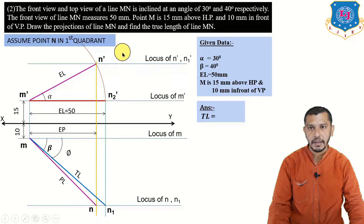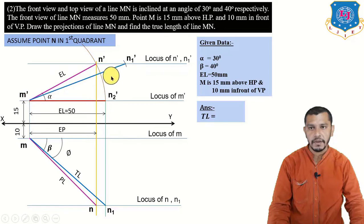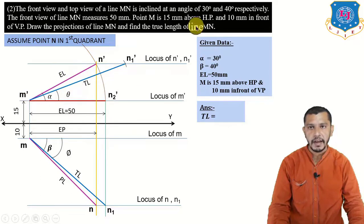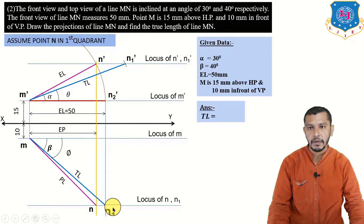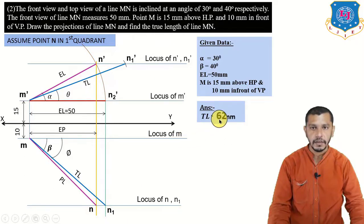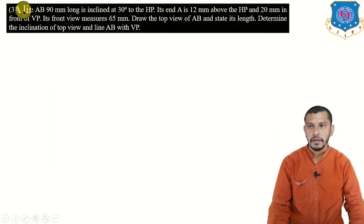Take center at M-dash with radius equal to MN1 (the true length) and give an arc — here we get N1-dash. Connect M-dash to N1-dash to get the true length and the angle theta. Measure the true length M-dash to N1-dash — it equals 60 mm. This is the final answer.